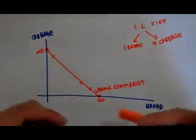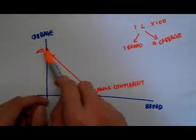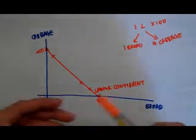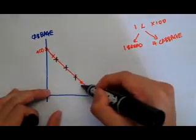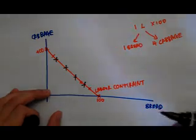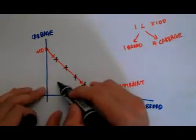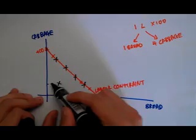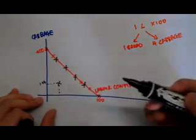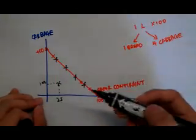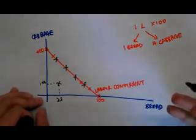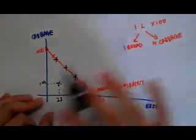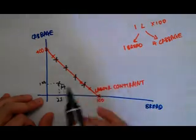Now we talk about being productively efficient. We know that by being on any of these points along this line, we have to give up a quantity of bread or cabbage for the other alternative — so any point along the line is considered productively efficient because we incur an opportunity cost. However, if we are somewhere inside the line — say 100 units of cabbage and 25 units of bread — I am not being productively efficient because I do not have to give up anything and I am not maximizing the use of my resources. Point A is not productively efficient.